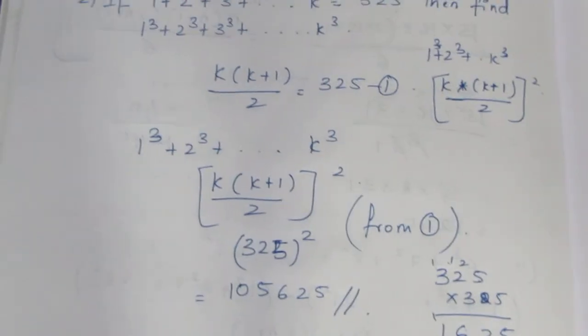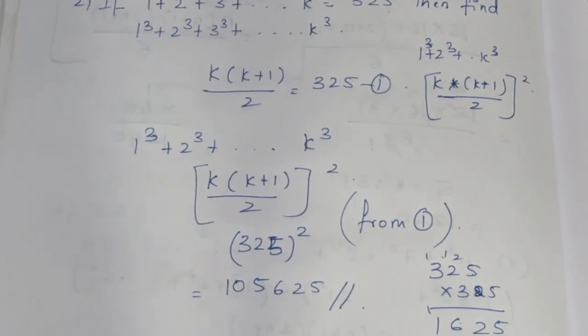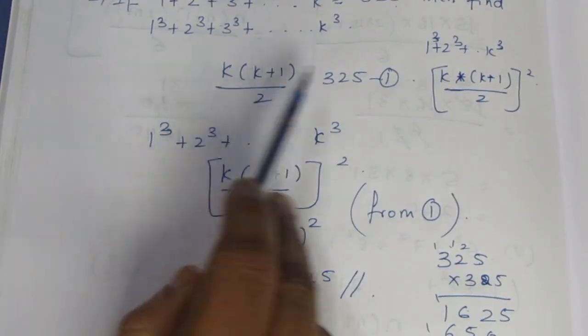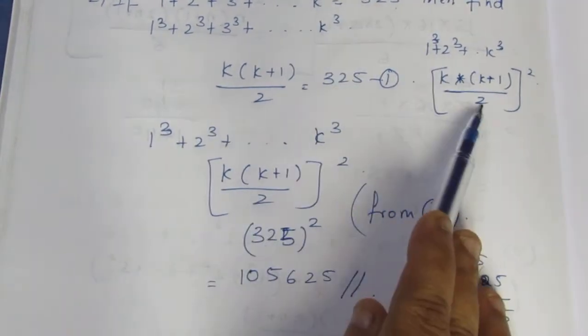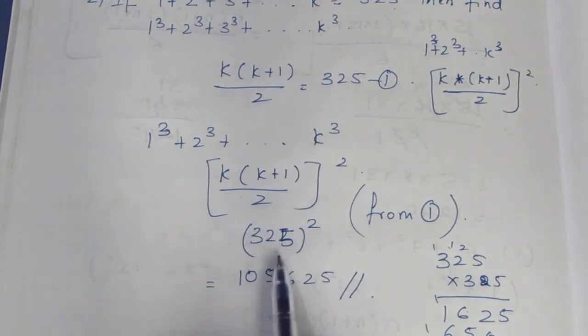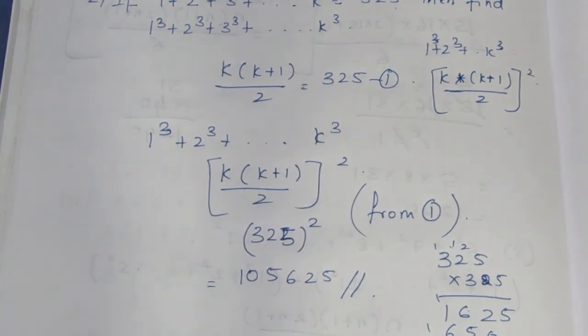So 325 × 325 equals 105625. That's the final answer. This sum is very easy. If you have any questions, you can write them in the comments. Thank you.